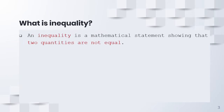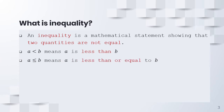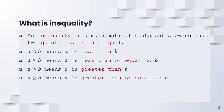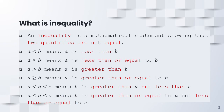So let's start. What is an inequality in mathematics? An inequality is a mathematical statement showing that two quantities are not equal. We could have a less-than symbol, a less-than-or-equal symbol — the small bar here signifies the possibility of equality — a greater-than symbol, a greater-than-or-equal symbol, and we also have continued inequalities. For continued inequalities, we start by reading them starting at the middle.